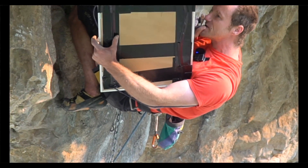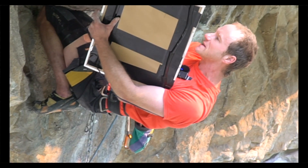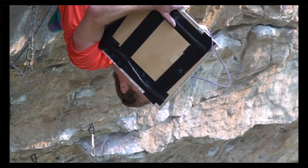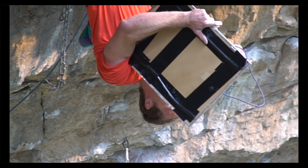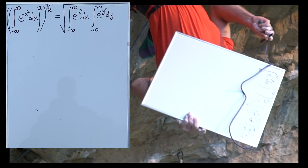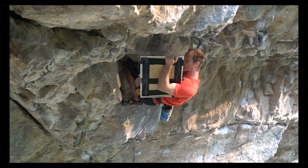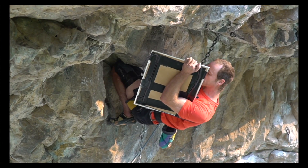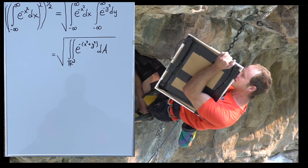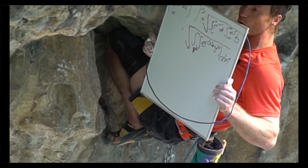Now if we do that, we get the square root of the integral from minus infinity to infinity of e to the minus x squared dx, times the integral from minus infinity to infinity of e to the minus y squared dy — all under a square root. Now we can change that to the double integral over all of r squared of e to the minus x squared plus y squared dA.